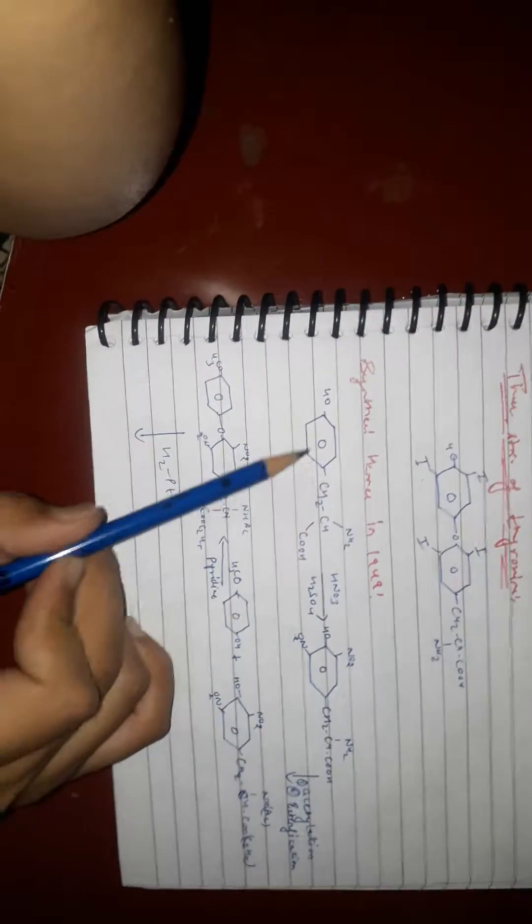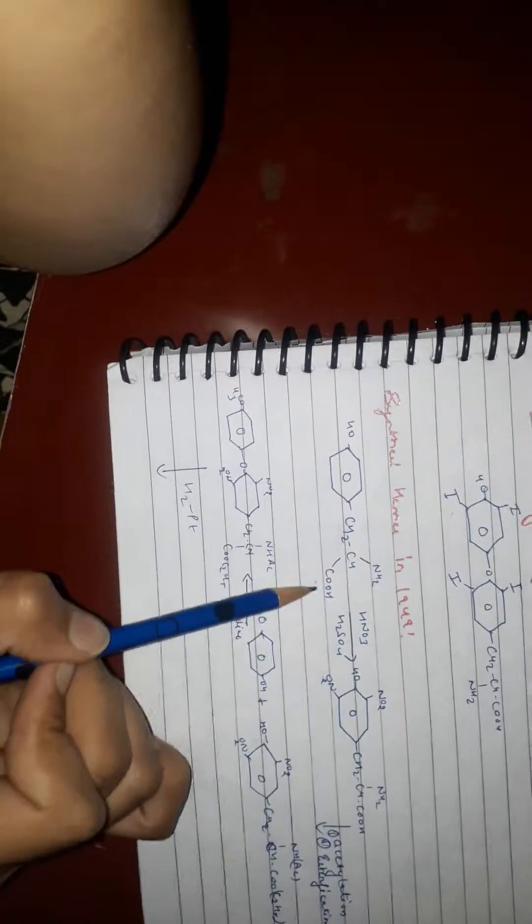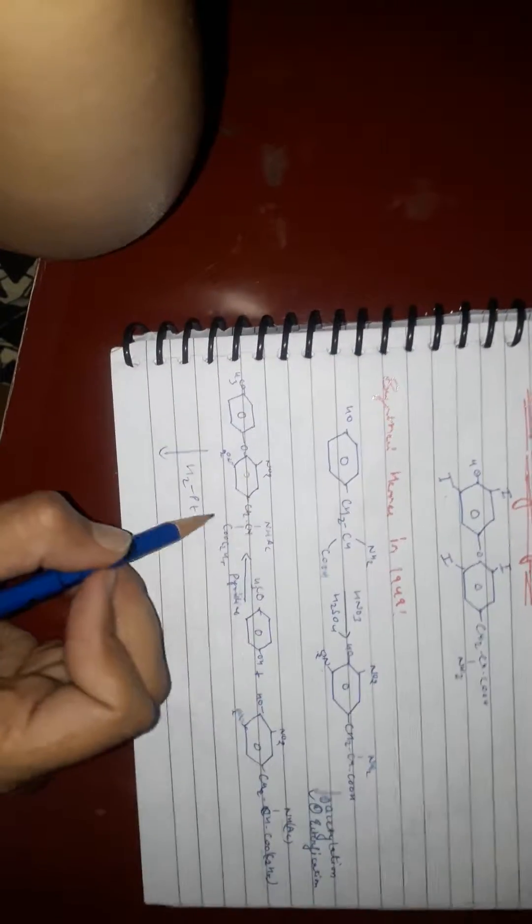Structure of thyroxine shows the presence of iodine groups. In thyronine there is no presence of iodine group. Synthesis: we will take that ring with OH, CH2CH, NH2COOH. We will use nitration; after that ortho position NO2 will be on. Acetylation and esterification: NHCH will be NHAC and COOH will be COC2H5.